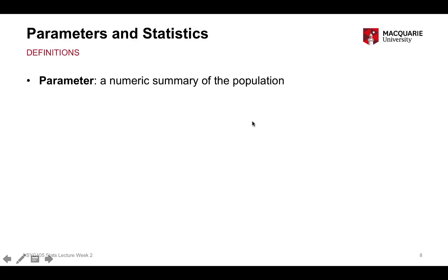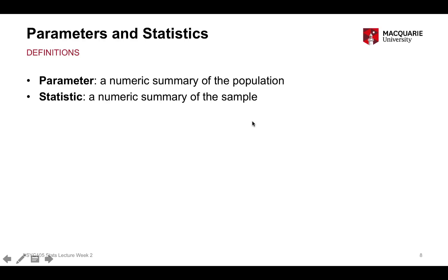Along the same lines, we have a distinction between a parameter and a statistic — numbers we use to summarise data. A parameter is a numeric summary which applies to the population, a numeric summary of the population phenomenon. Whereas a statistic is a numeric summary of the sample itself.